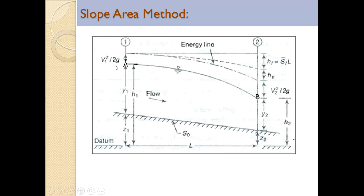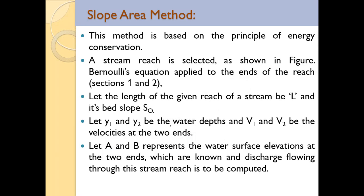The velocity head at section one is v1² / 2g and at section two is v2² / 2g. There is head loss due to friction, and the total head loss is shown on the energy line. This method is based on the principle of energy conservation — a stream reach is selected and Bernoulli's equation is applied to the ends of the reach for section one and section two.